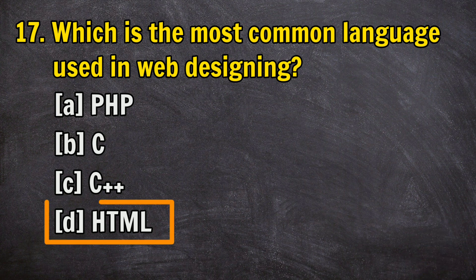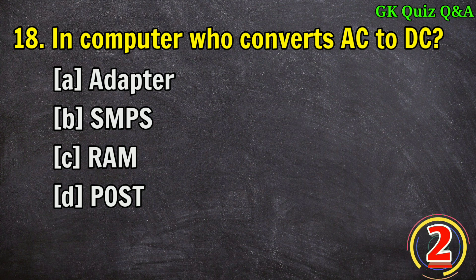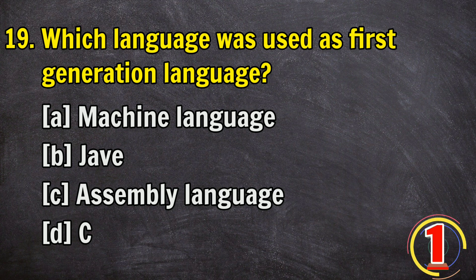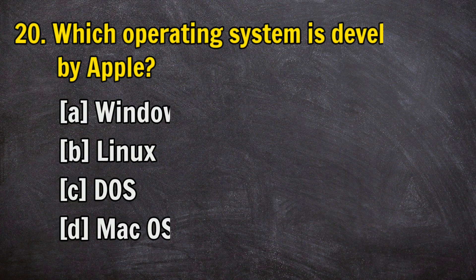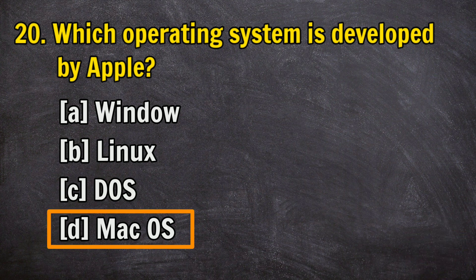Question 17: Which is the most common language used in web designing? Answer D: HTML. Question 18: In a computer, what converts AC to DC? Answer B: SMPS. Question 19: Which language was used as a first-generation language? Answer A: machine language.